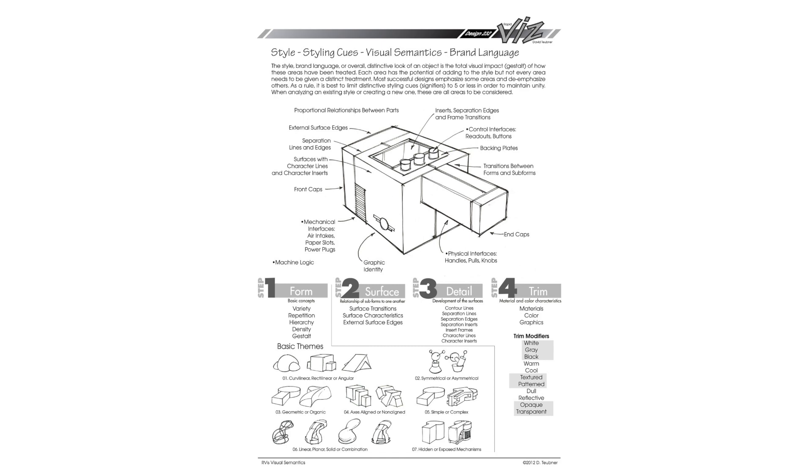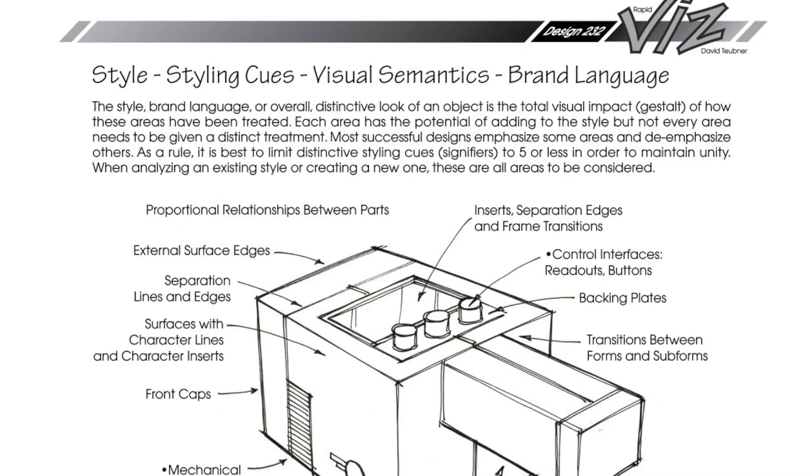It's all about styling cues, so let's take a look. This covers style, styling cues, visual semantics, and brand language. The style and brand language of an object is the total visual impact of how these areas have been treated, talking about different forms, form language, and the theme of the product, applying them to individual areas.